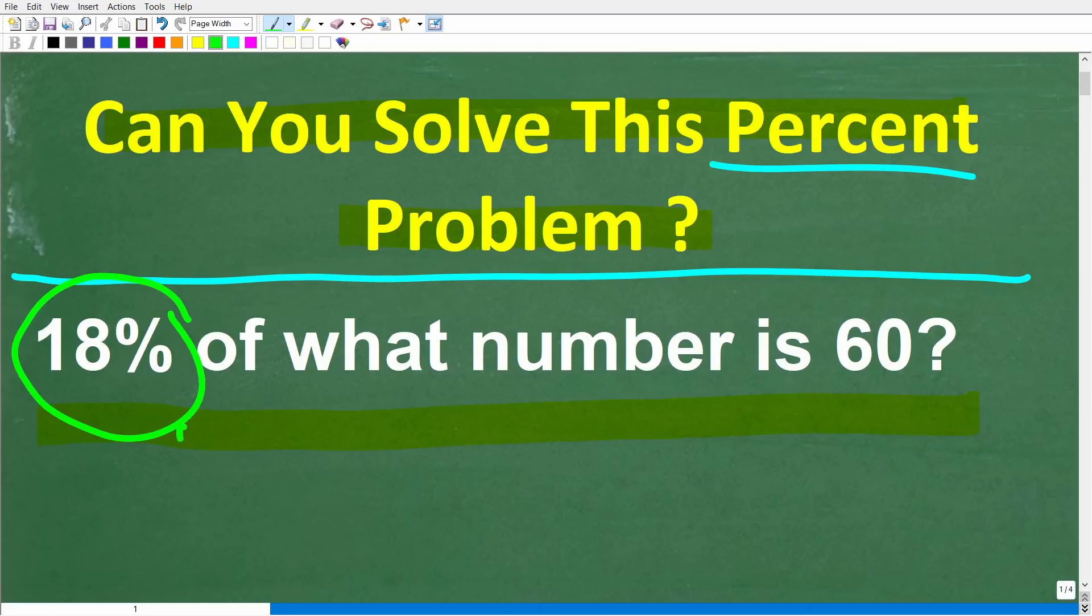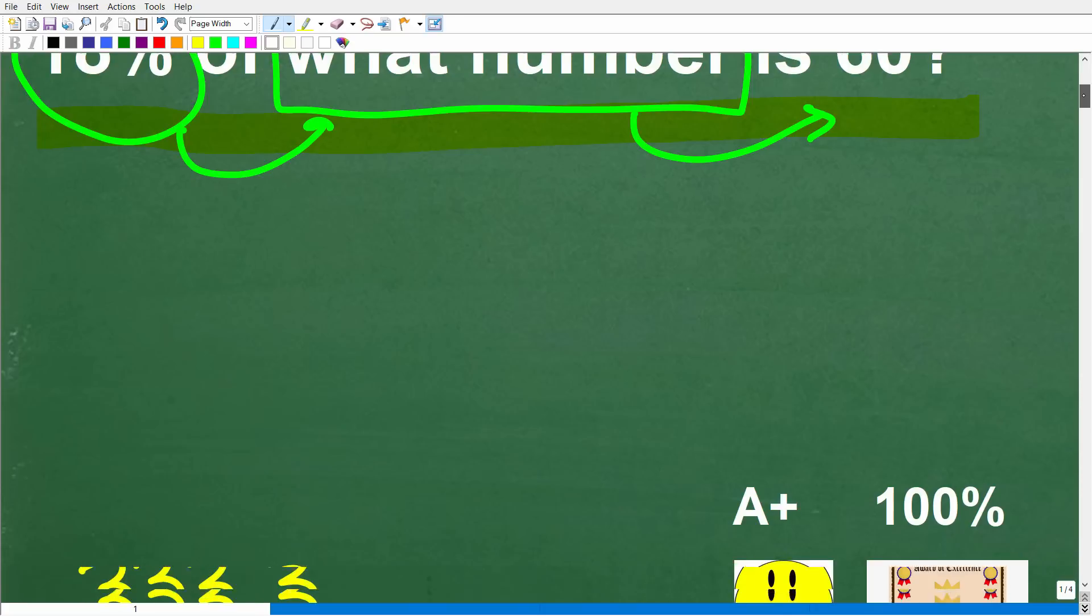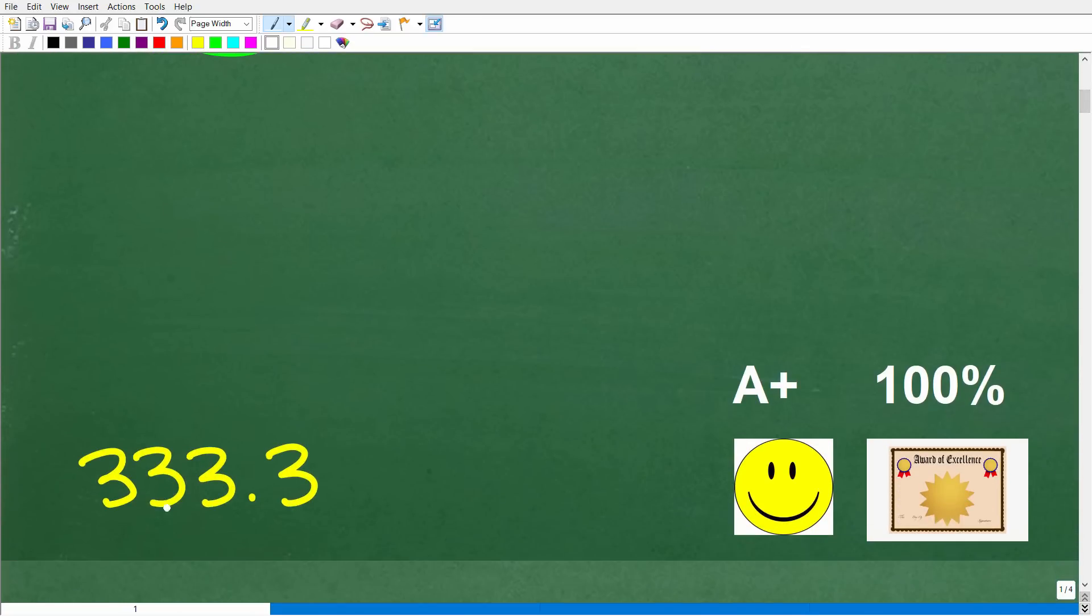Alright, so one more time. 18% of some number is 60. Alright, so let's go ahead and take a look at the answer. The correct answer here is the following, 333.3.